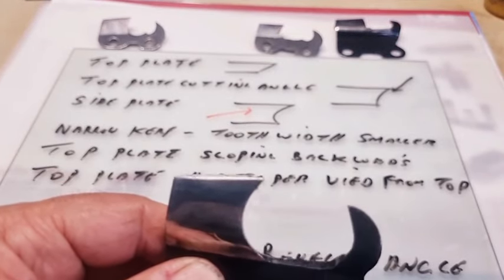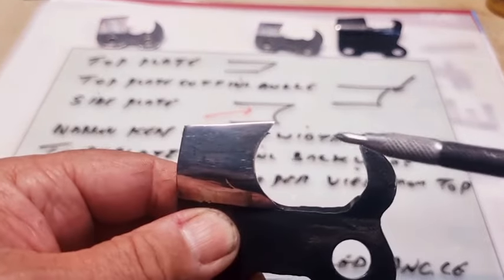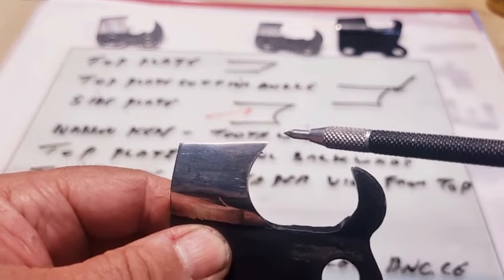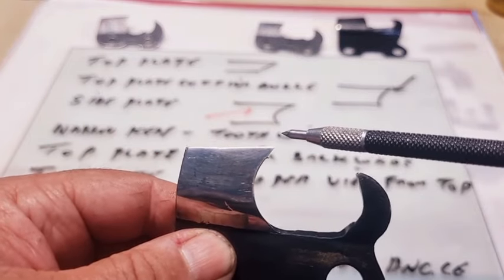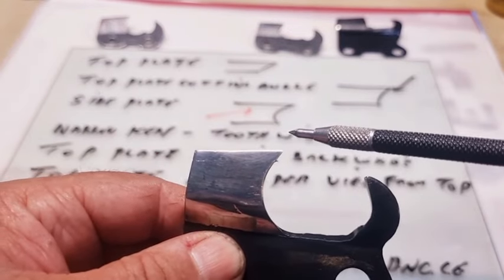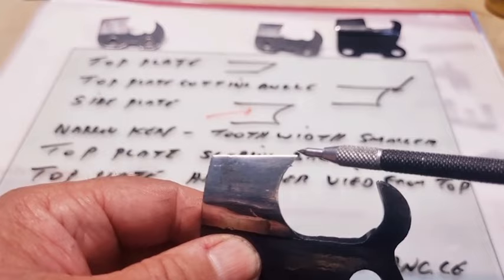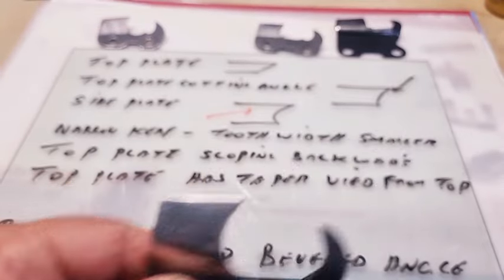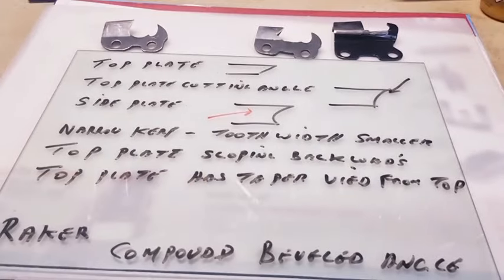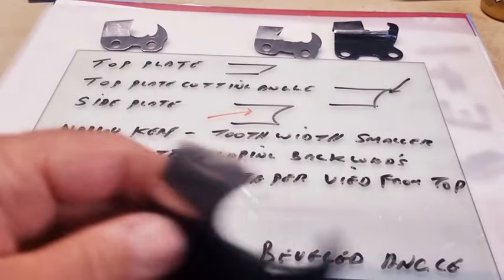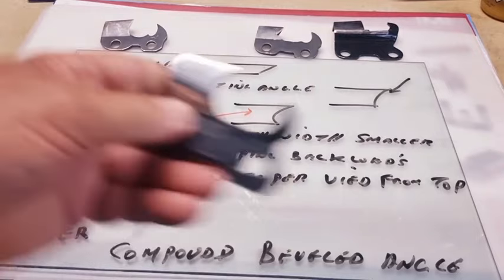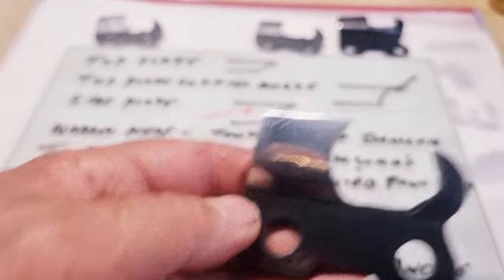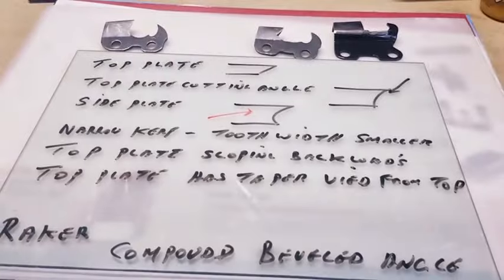Those are your two different angles: top plate and top plate cutting angle. When a round file is put in here and sits about 20 percent higher than the tooth at this point, it will be about 60 degrees. The next term is side plate — this is the side plate here.